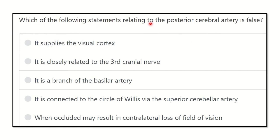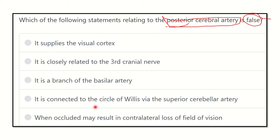Which of the following statements relating to the posterior cerebral artery is false? We have to know about the posterior cerebral artery in detail and find out which option is not true. The options are: it supplies the visual cortex; it is closely related to the third cranial nerve; it is a branch of the basilar artery; it is connected to the circle of Willis via the superior cerebral artery; when occluded may result in contralateral visual field loss.